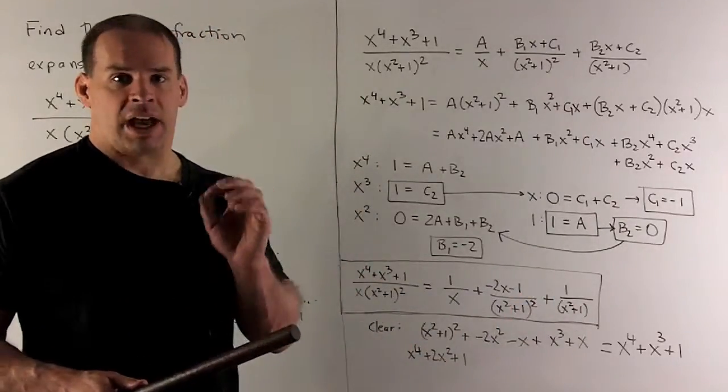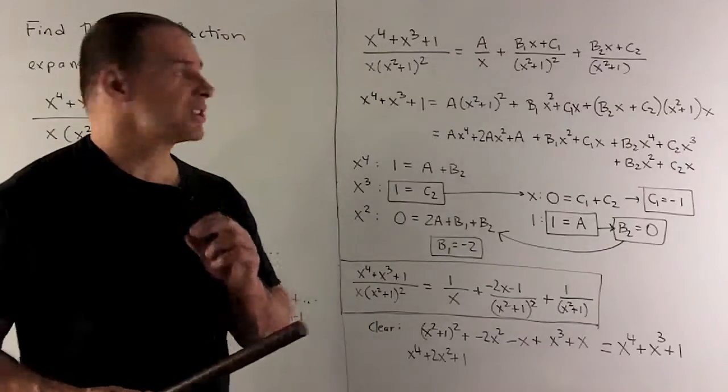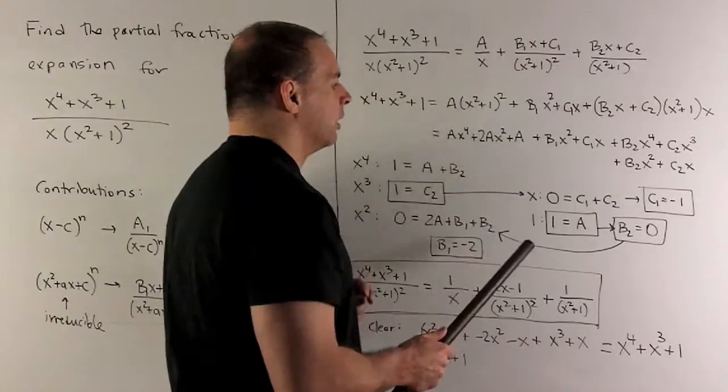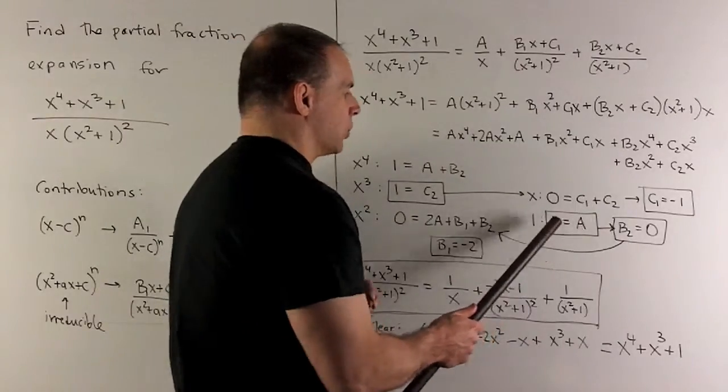Then finally, the constant term. So that means no x. We're going to have a 1 over here. And then on the other side, I'm just going to have A. So we'll also get A is equal to 1.